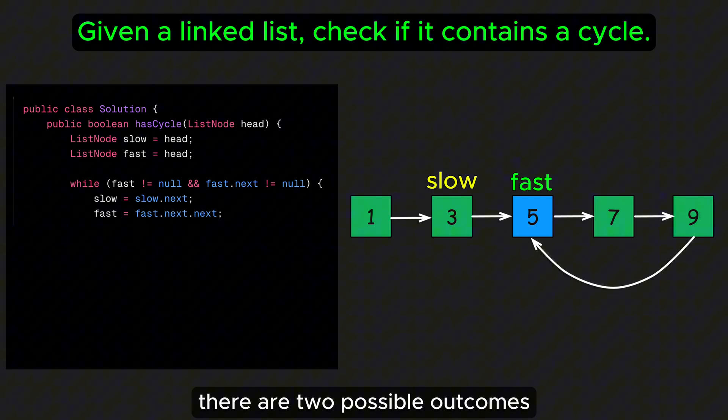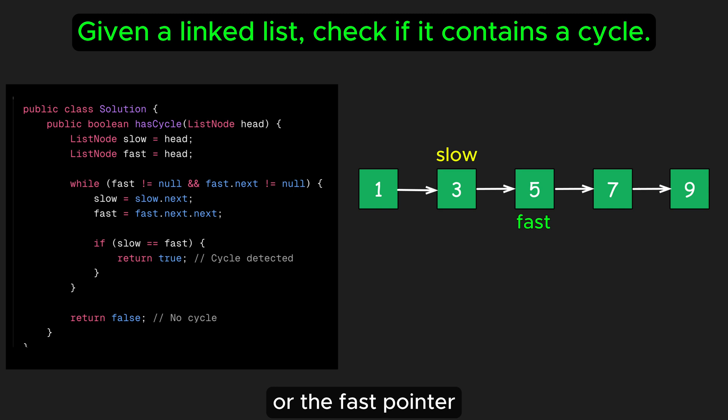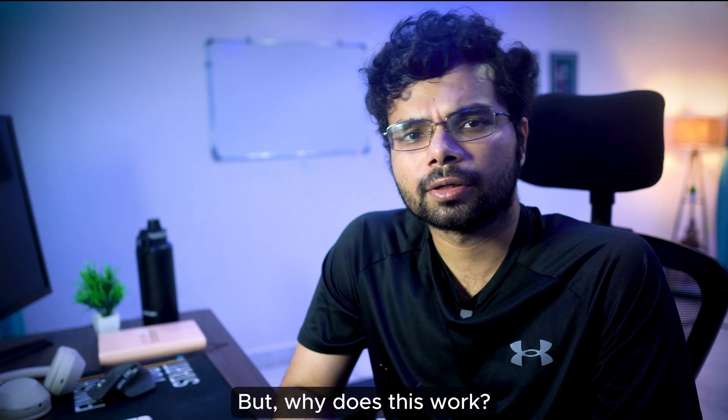There are two possible outcomes. The slow and fast pointers meet. If this happens, there is a cycle in the linked list. Or the fast pointer reaches the end of the list. In this case, there is no cycle. But why does this work? Let's break it down.